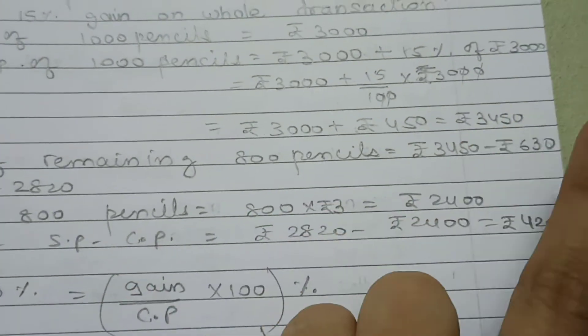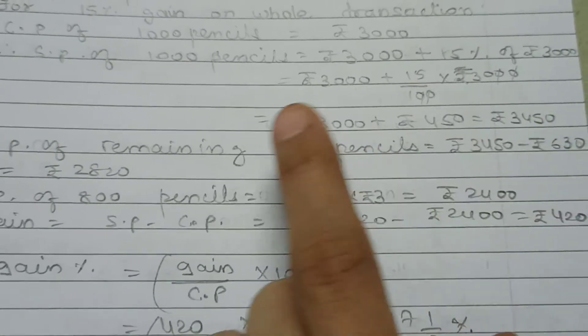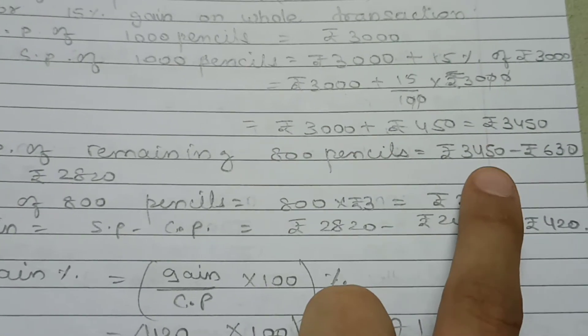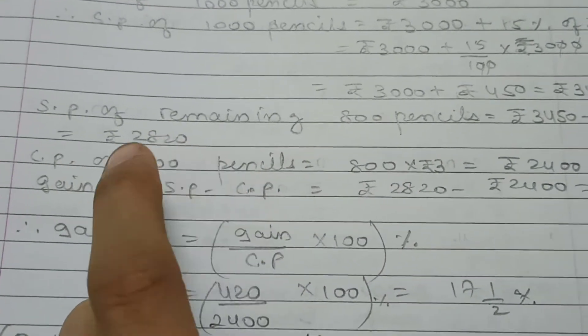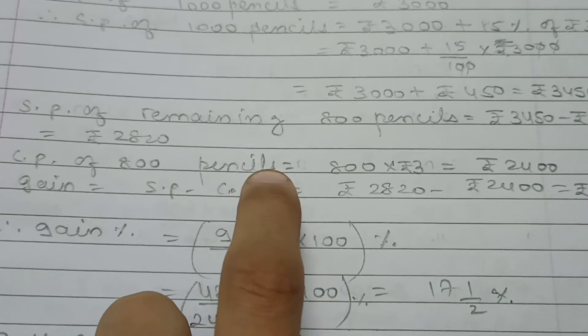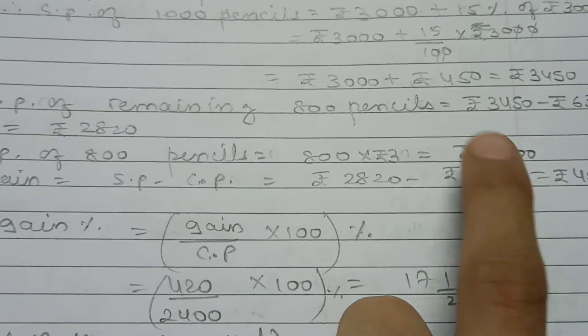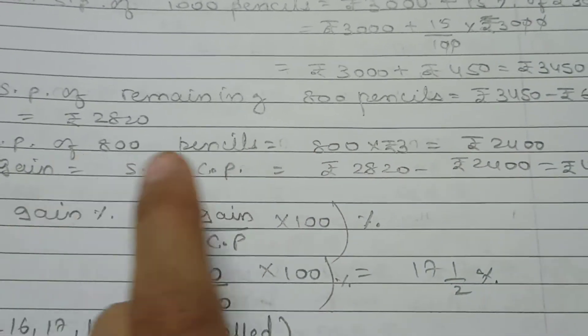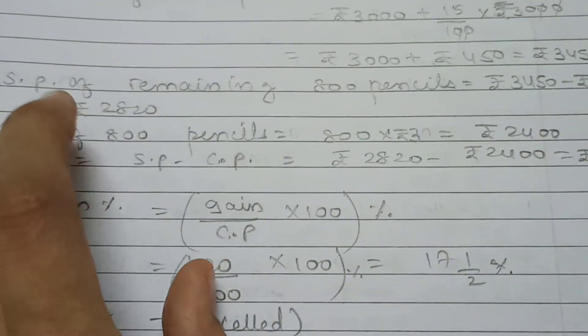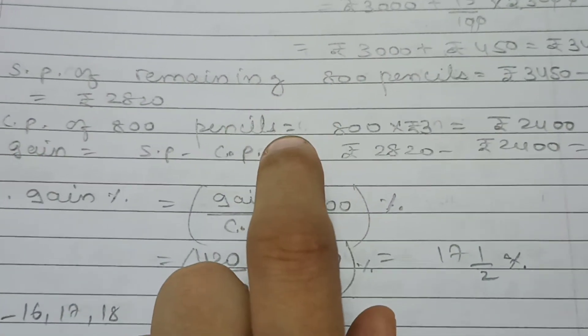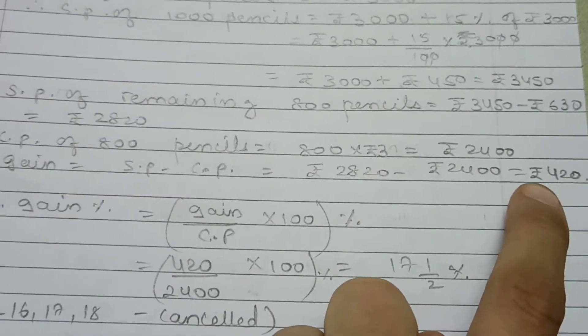We know selling price of 200 pencils is 630, so 800 pencils' SP is 3450 minus 630, that is 2820. Cost price of 800 pencils is 800 multiplied by 3, equals 2400. So, gain is 2820 minus 2400, that is 420.